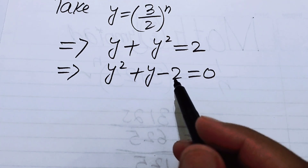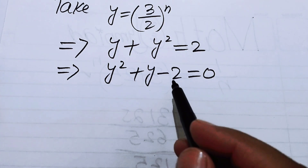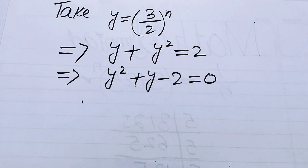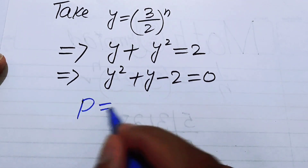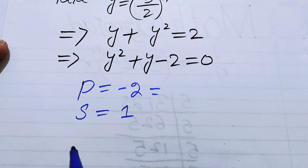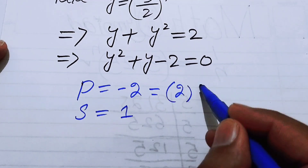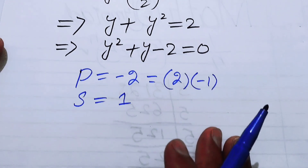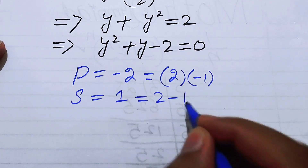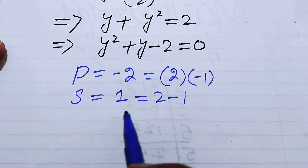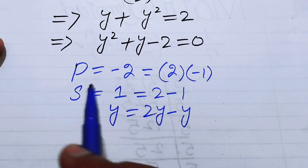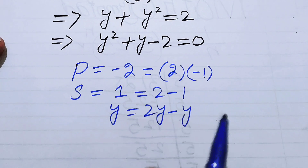To factor this quadratic, we need two numbers whose product is minus 2 and whose sum is plus 1. Those two numbers are 2 and minus 1: multiplying gives minus 2 and adding gives plus 1. So we replace plus y with 2y minus y.